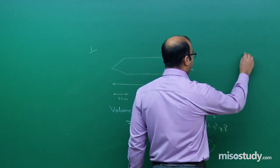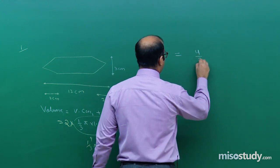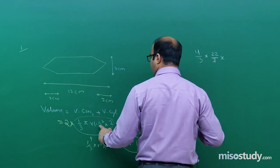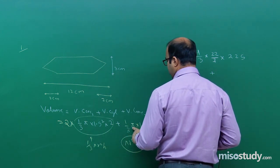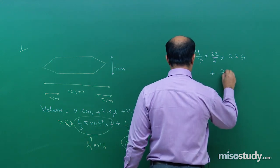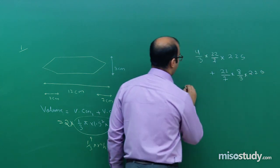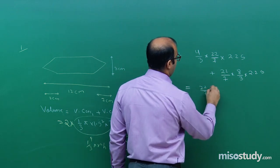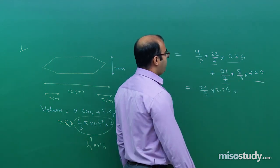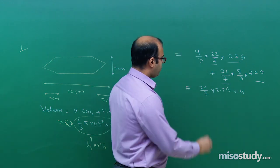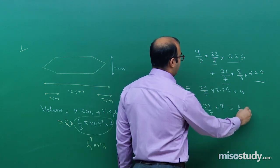Calculating: two cones give 2 × 1/3 π = 2/3 π, and adding the cylinder term 1/3 × 8 gives a combined factor. Taking 22/7 and 2.25 (= 1.5²) as common factors: 4/3 + 8/3 = 12/3 = 4. So total volume = (22/7) × 2.25 × 4 = (22/7) × 9 = 9 × 22/7 cm³.